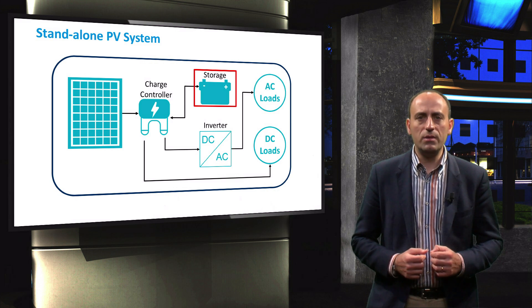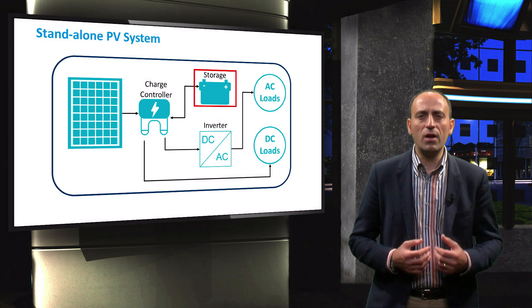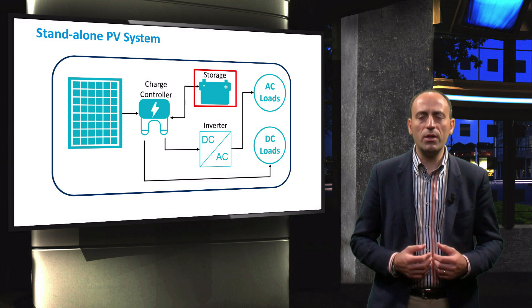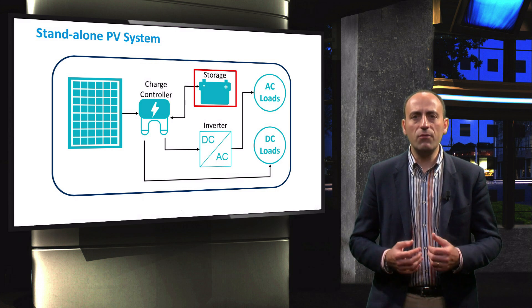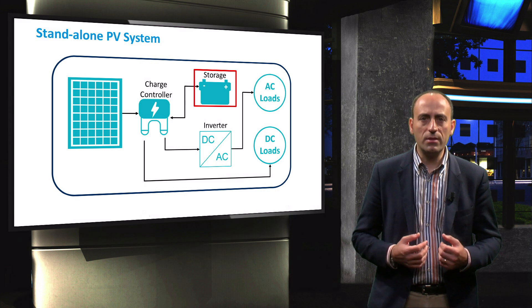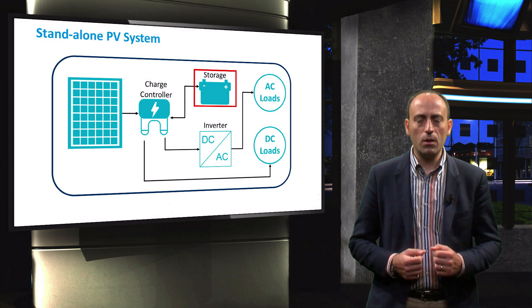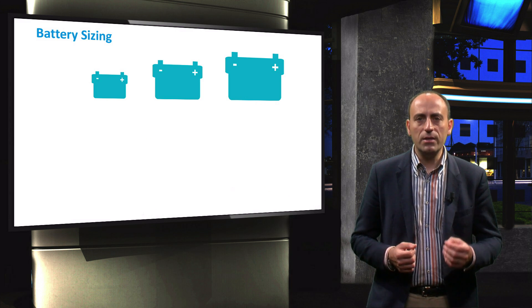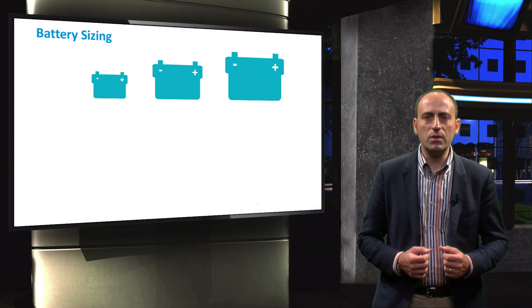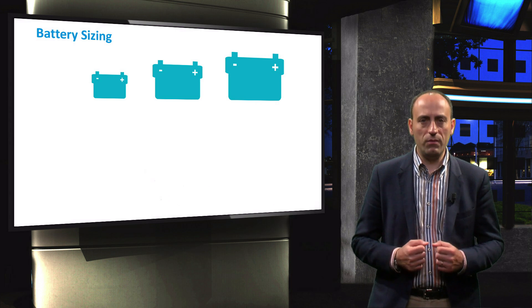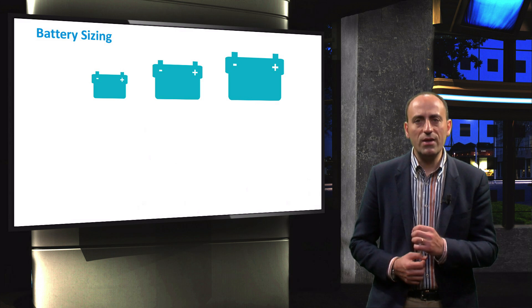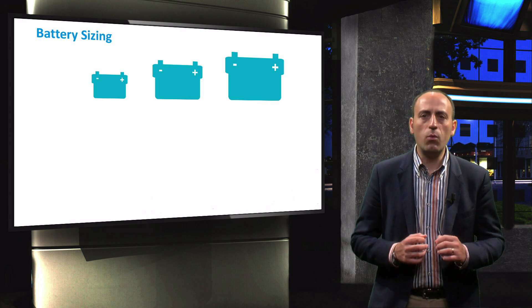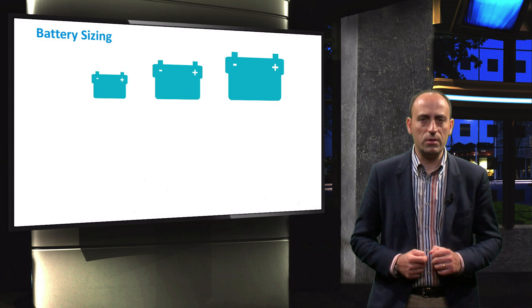For an off-grid PV system, the backup is provided by the storage components, which store energy in times when the PV modules generate more electricity than the loads consume, and it can deliver energy to electric appliances when the load demand exceeds the generation. The storage component, which is usually a battery bank, is a crucial system component that directly influences the reliability of the PV system. Properly sizing the battery bank is therefore one of the most important design steps in a standalone PV system.